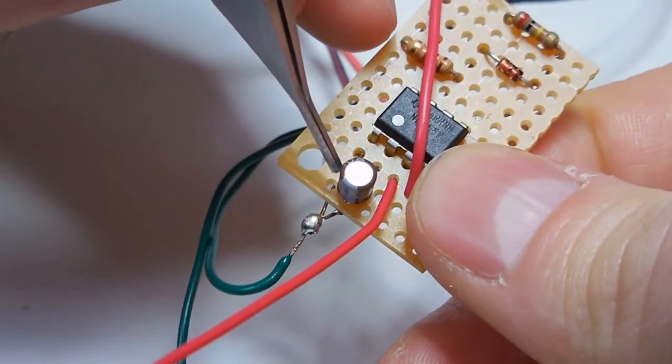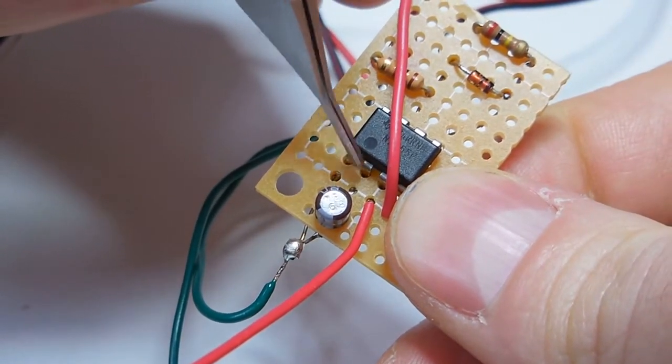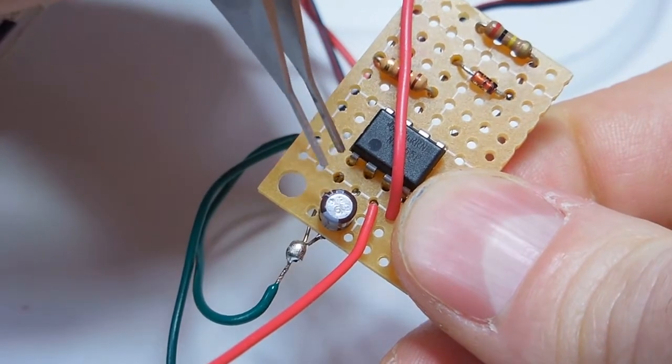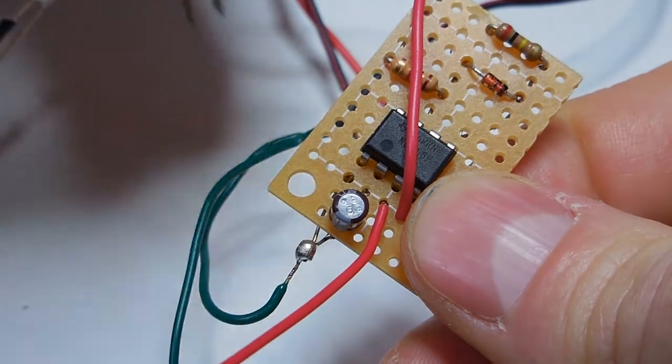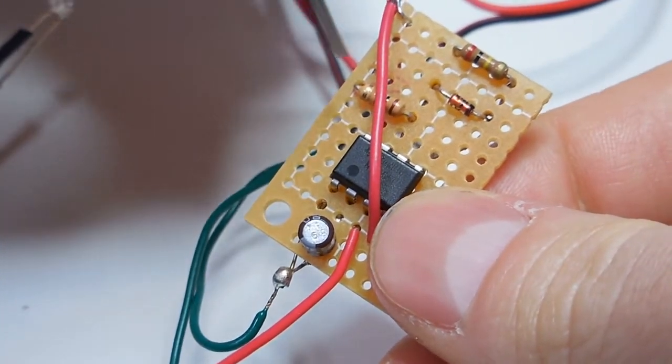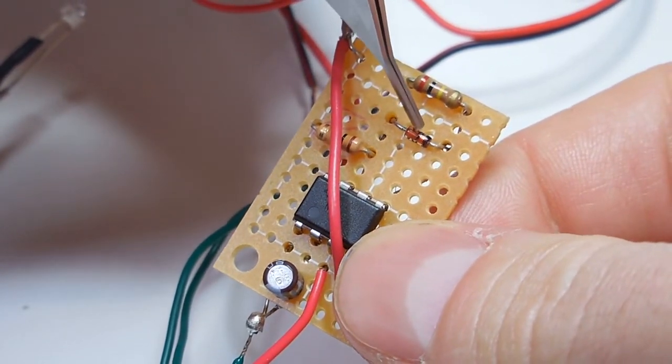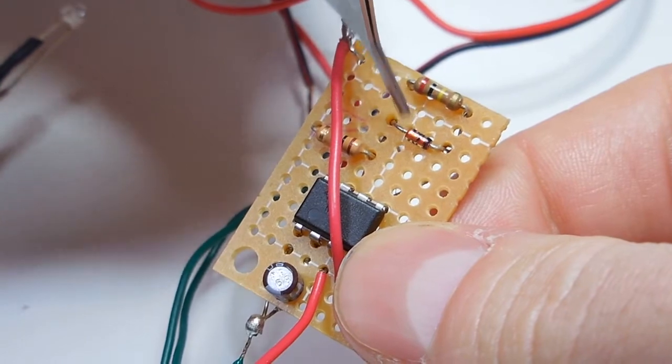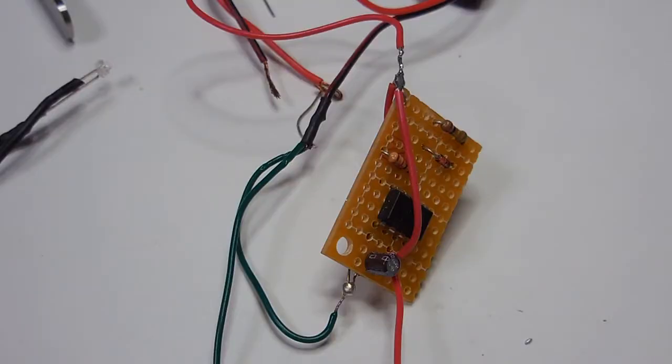...that the capacitor's positive side needs to be connected to the number two pin. It was working regardless, but it's working even better now. So yeah, the main thing here was this diode was backwards, so it's working now.